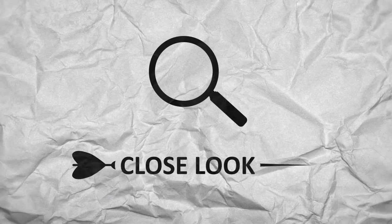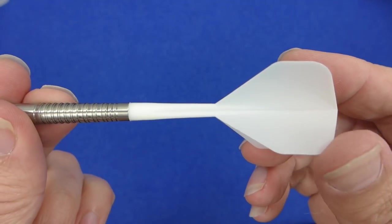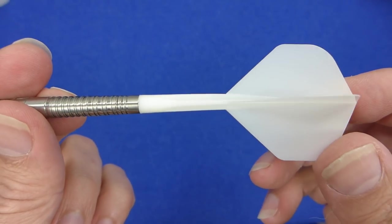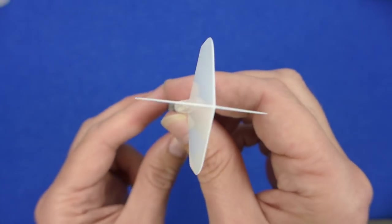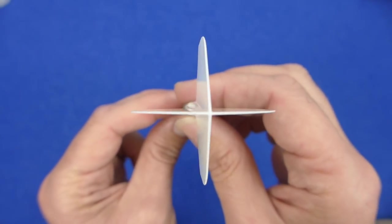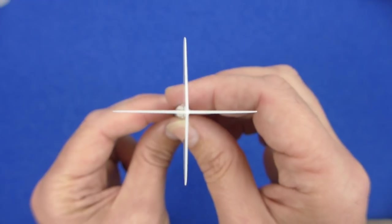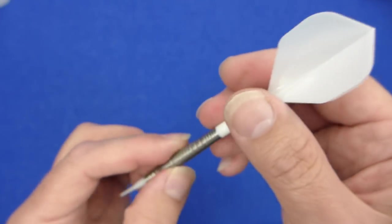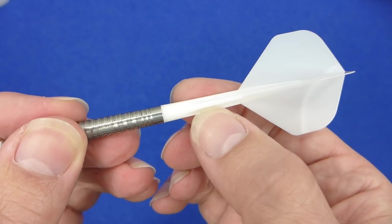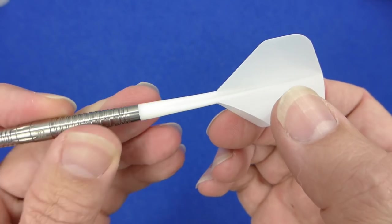Here's the close-up of the Condor Zero Stress flights. I've showed you a close-up of these before but anyway here's the full review. As you can see it's a perfect 90 degree angle and it's got these kind of grooves cut along the stem.